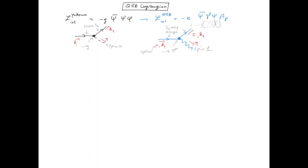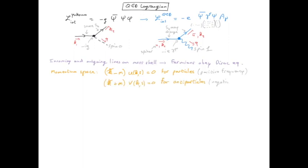The incoming and outgoing fermionic lines are on mass shell. And because we consider incoming and outgoing particles with a well-defined energy momentum for vectors, it's easier to use the Dirac equation in momentum space.